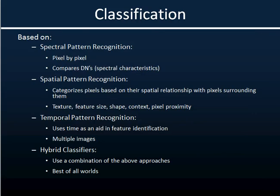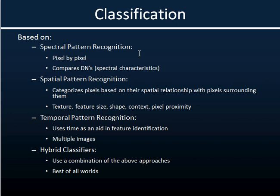There are lots of different ways to perform a classification with your satellite or aerial imagery. The most traditional approach is spectral pattern recognition — basically a pixel-based approach. When doing spectral pattern recognition, you're using the spectral data to try to identify similar reflectance features.